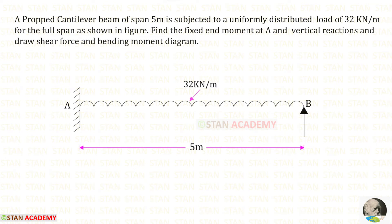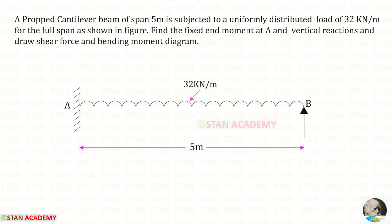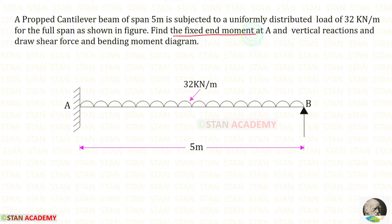Today we are going to do a problem based on a propped cantilever beam. A propped cantilever beam of span 5 meters is given. The beam is subjected to a uniformly distributed load of 32 kilo Newton per meter for the full span. We have to find the fixed end moment at A, the vertical reactions, and then draw the shear force and bending moment diagrams.